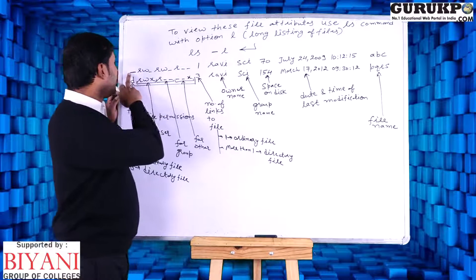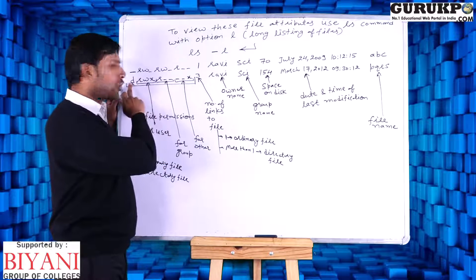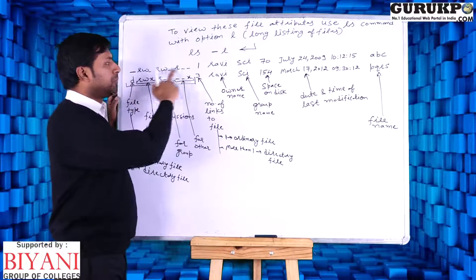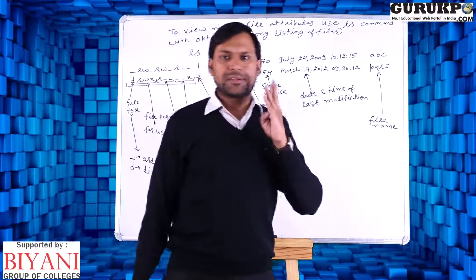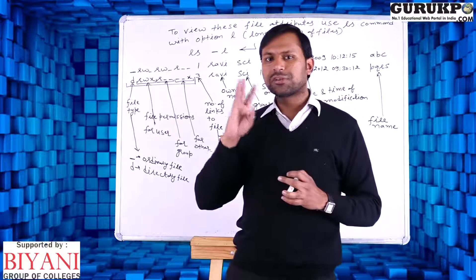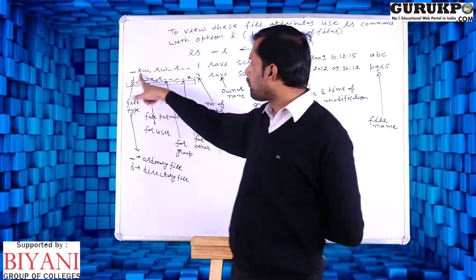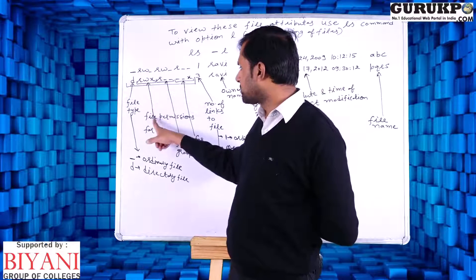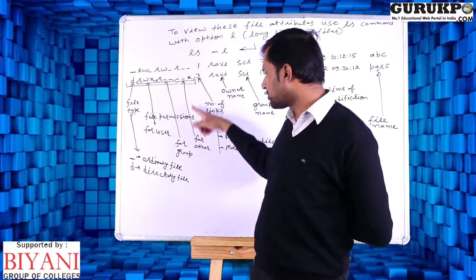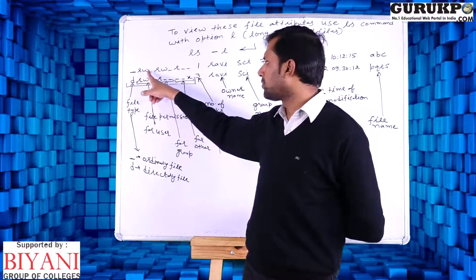File type: if the first character starts with underscore, it represents an ordinary file; if it starts with d, it represents a directory file. Then file permissions: there are three permissions — read, write, execute — for three types of users: owner, group, and others. The first three characters show file permissions for owner, next three for group, and the last three for others.